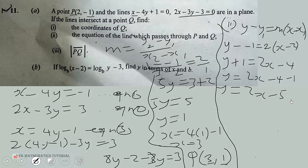You can leave the equation in any form. For example, 2x minus y equals 5, or 2x minus y minus 5 equals 0. All of these are equivalent and all are correct.